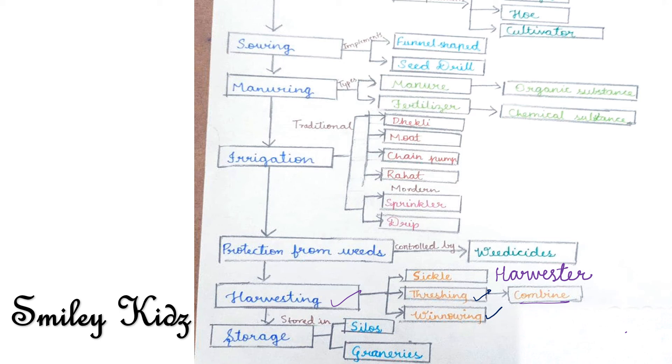Now what is winnowing? Farmers with small holdings of plants do the separation of grain and chaff by the process of winnowing.